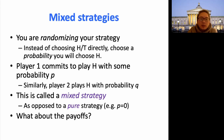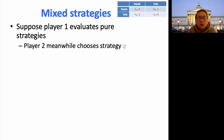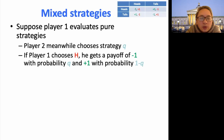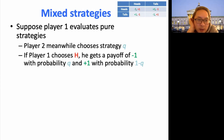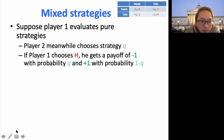So what is the payoff then? In this case, the payoff would be the expected value. Suppose player one considers a pure strategy, but player two is choosing a mixed strategy Q. If player one chooses H, he will get a payoff of minus one with probability Q — because player two has a probability Q of choosing hats.